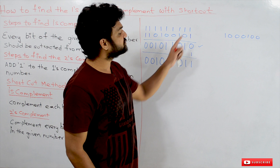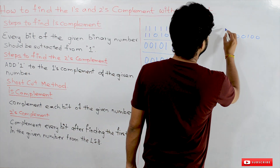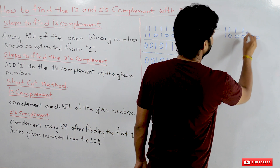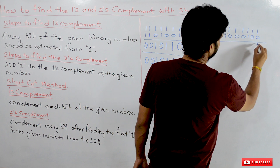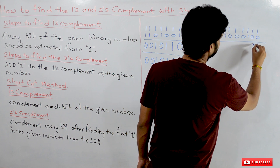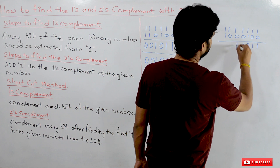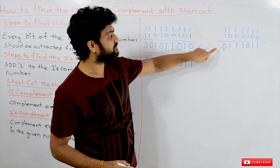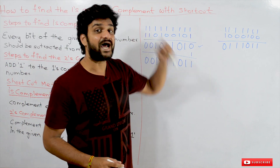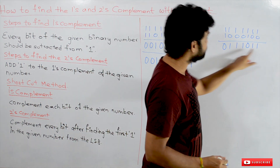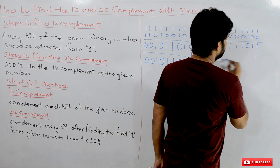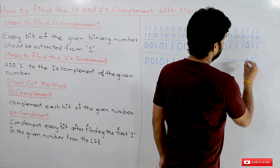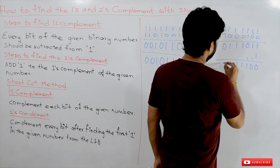Now try the ones complement and twos complement on the second number. We subtract every bit of the given number from 1: 1 minus 0 is 1, 1 minus 1 is 0, and so on, giving the ones complement. To find the twos complement, add 1 to the ones complement, giving 0 1 0 1 1 1 1 1 0.